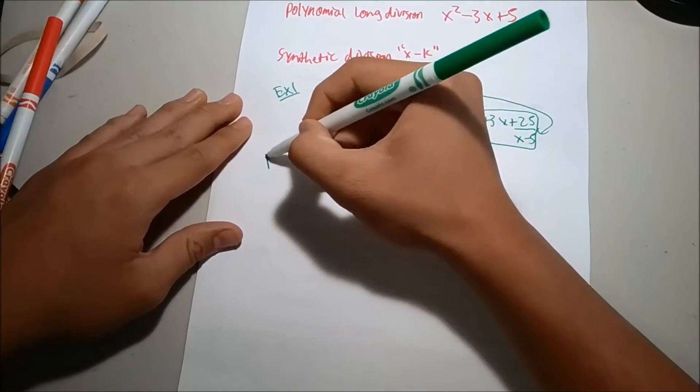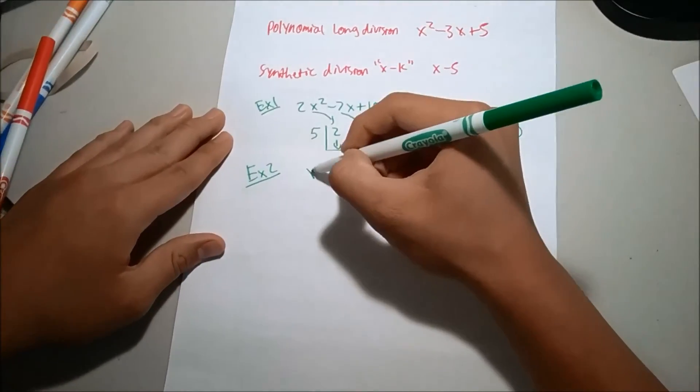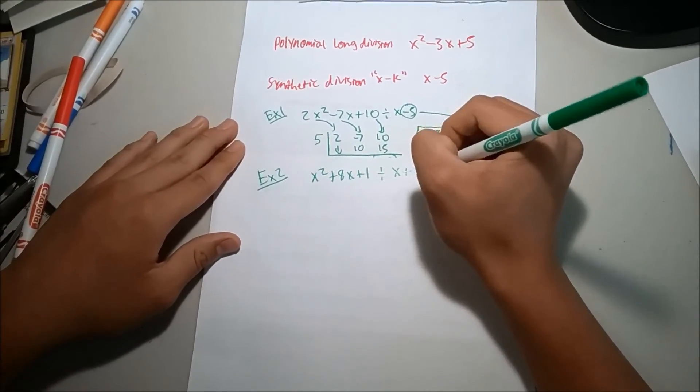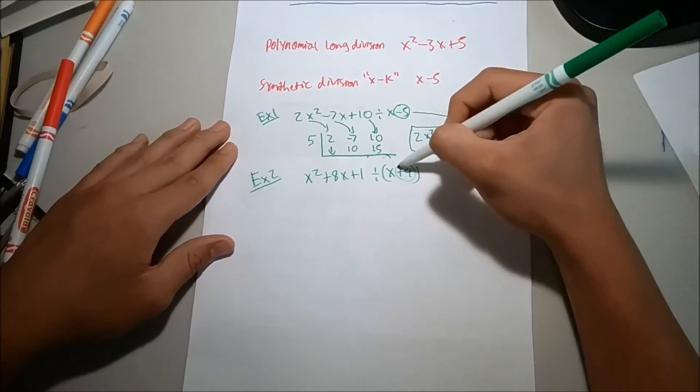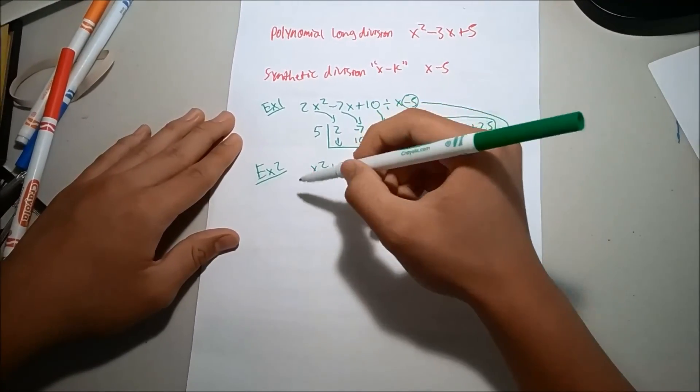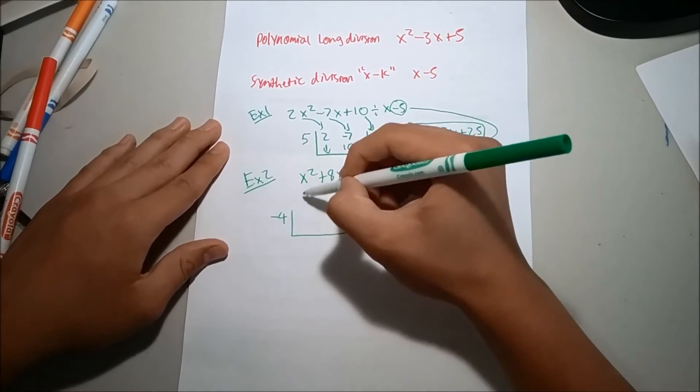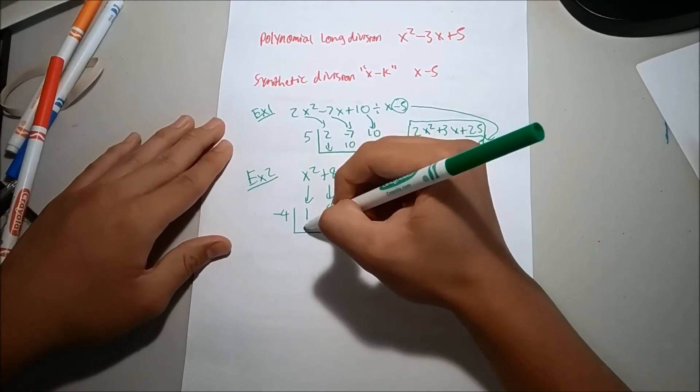Now we'll move on to example 2. The example 2, the problem is x squared plus 8x plus 1 divided by x plus 4. Now, as usual, we will be changing the sign here. So, then it will become negative 4. Don't forget the L form. 1, 8, 1.